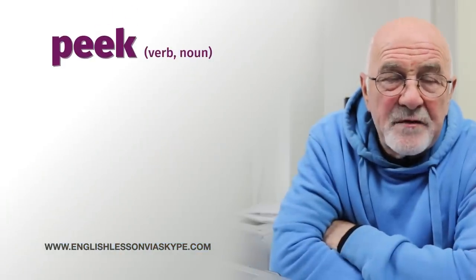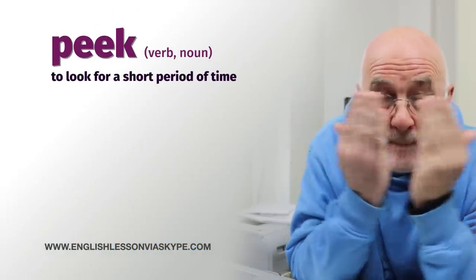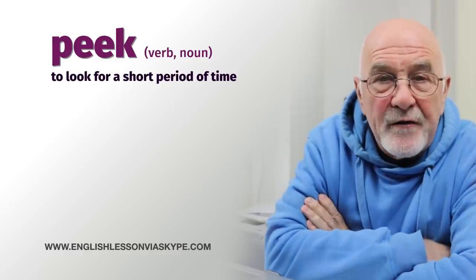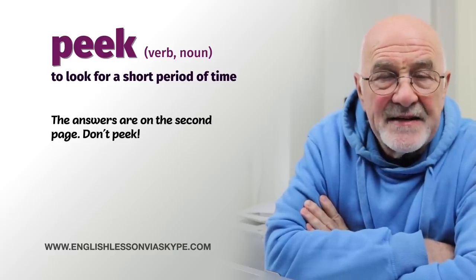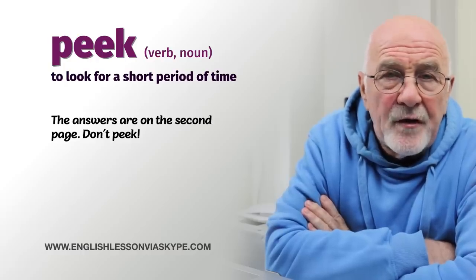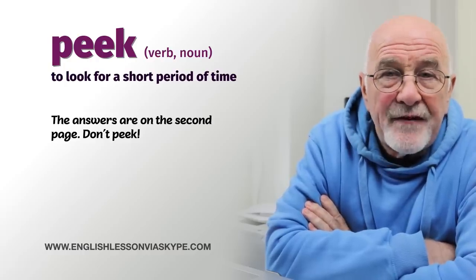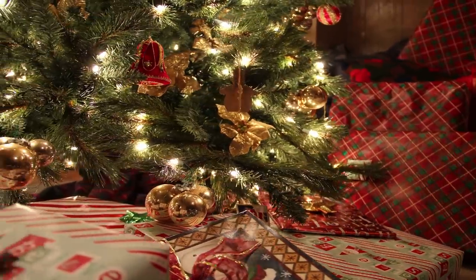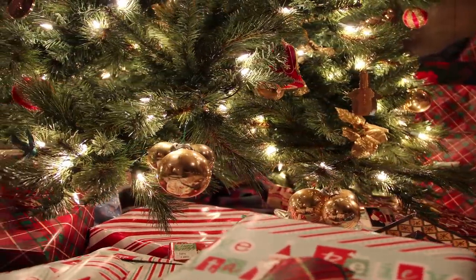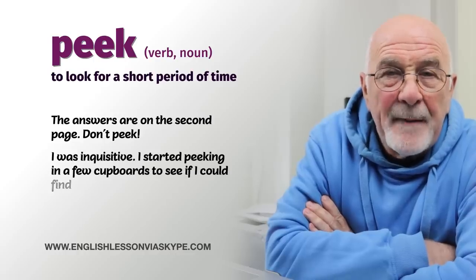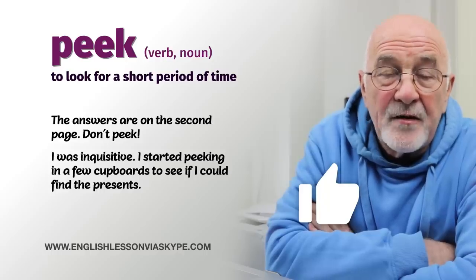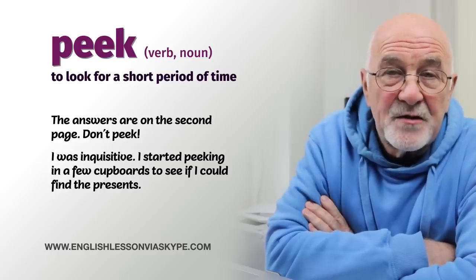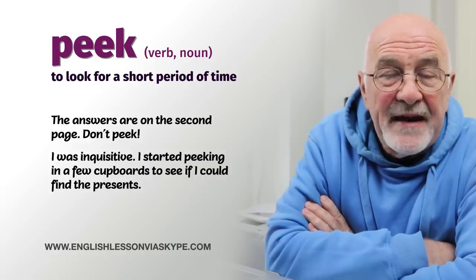Peek. We used to have a game with the kids — peekaboo. To peek is when you look very quickly: you hide your eyes or close them, then open them — peek. So to peek at something means to take a quick look. For example, if you come home and you're trying to find out the presents someone has bought for Christmas, you start peeking in a few cupboards to see what has been bought. You're trying to just take a quick peek — a quick look — to see what it might be.